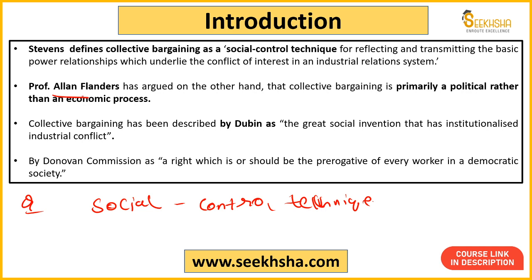Next comes Professor Alan Flanders. He says collective bargaining is a political mechanism — it is not an economic resolution to fix the economy. It is a political system through which employers are willing to give something to workers so that their political power can be maintained. It becomes an institutional mechanism through which you can deal with industrial conflict.